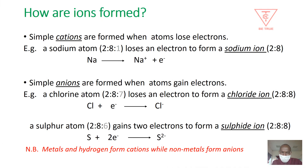How is an ion formed? A simple cation is formed when an atom loses electrons. For example, consider a sodium atom whose electron configuration is 2, 8, 1. For it to become stable, it has to lose one electron, and when it does that it becomes a sodium ion, as shown in that equation.